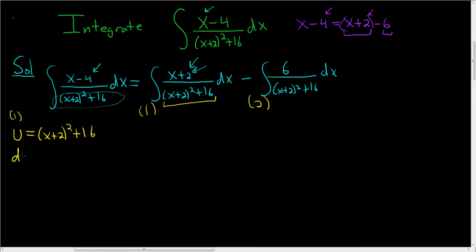And then so du is simply, you bring the 2 down, so you get 2(x+2) to the first power, times the derivative of x+2, which is 1, and then we have the dx. And the derivative of 16 is 0, so it's not significant. Here we don't have a 2, here we do have a 2. So we'll divide by 2, so we end up with (1/2)du = (x+2)dx.